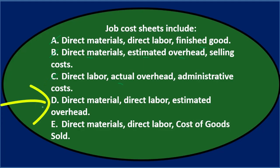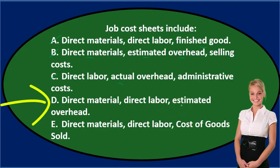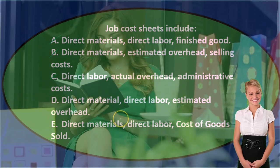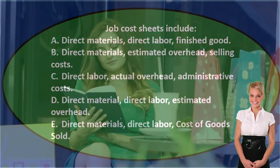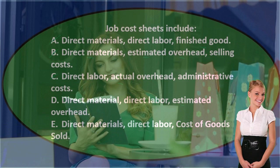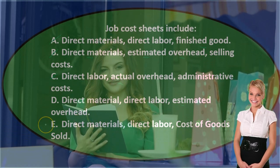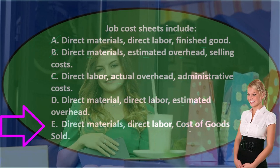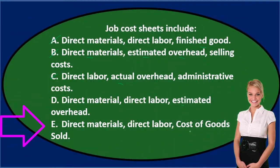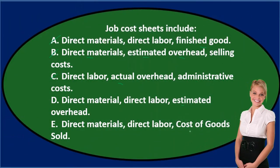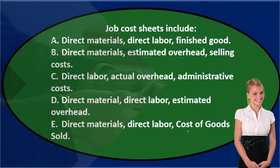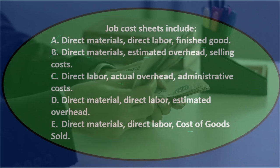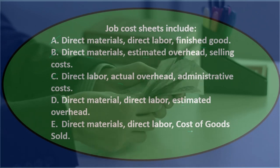D says direct materials, direct labor, and estimated overhead. That looks pretty good because those are the three that I would expect to see. Then the last one, E, says direct materials, direct labor, cost of goods sold. We wouldn't think it's cost of goods sold because that's what happens once we finally sell it — that's not on the job cost sheet.